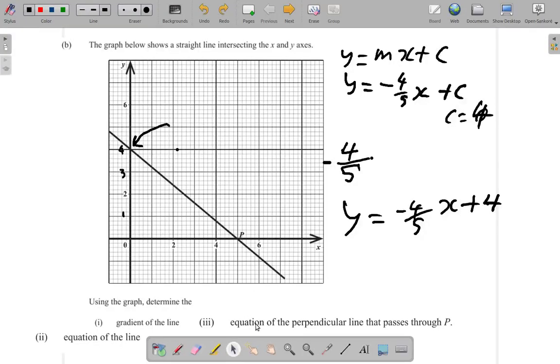Now part 3 is asking for the equation of the perpendicular line that passes through P. P is right here. So that perpendicular line probably looks something like this.